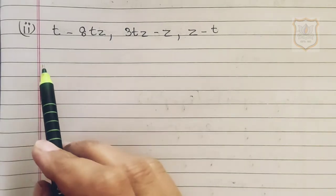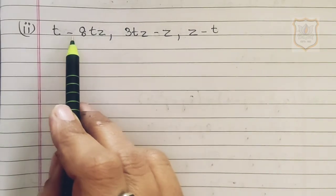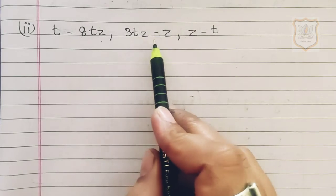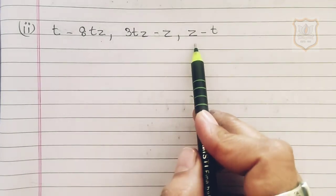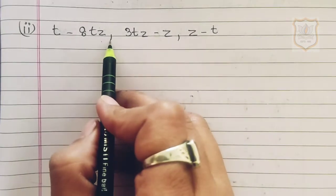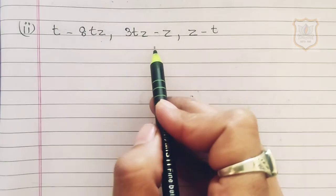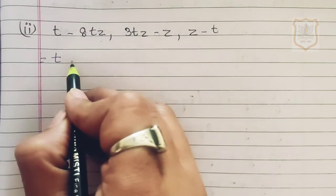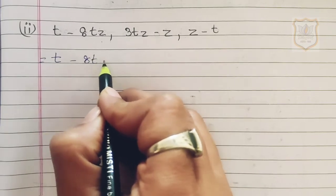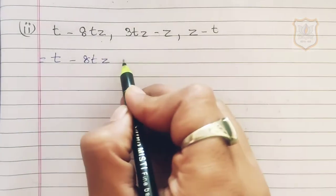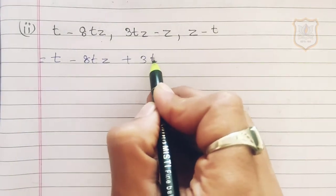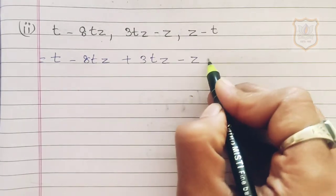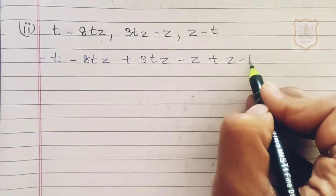Now the second part of question number 2: t minus 8tz, 3tz minus z, z minus t. In place of the comma we put a plus sign, giving: t minus 8tz plus (3tz minus z) plus (z minus t).